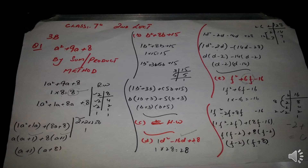Part f: f² + 6f - 16. The coefficient of the highest power multiplied by the last term gives minus 16. Taking the LCM of 16: 2 × 2 × 2 × 2 — the first three 2s give 8 and the last 2 is left. We split 6 into minus 2 and plus 8 — because 8 is bigger than 6 it gets the positive sign, and minus 2 plus 8 equals plus 6, while minus 2 × 8 equals minus 16. Taking f common from the first bracket and 8 from the second, the factors are (f − 2)(f + 8).